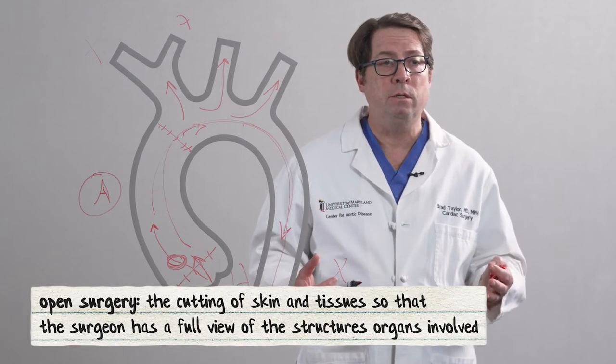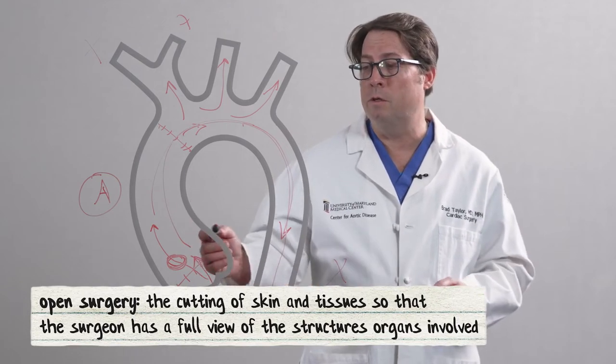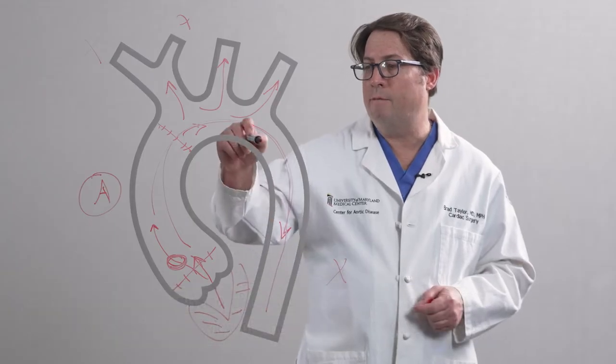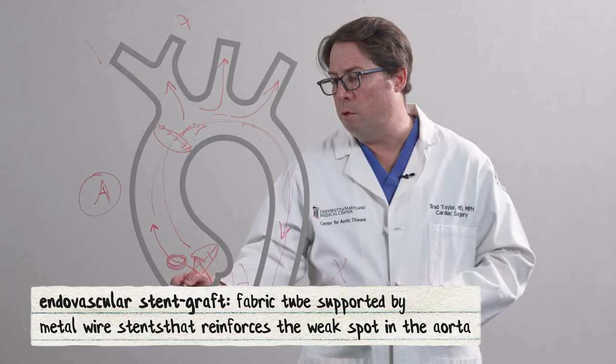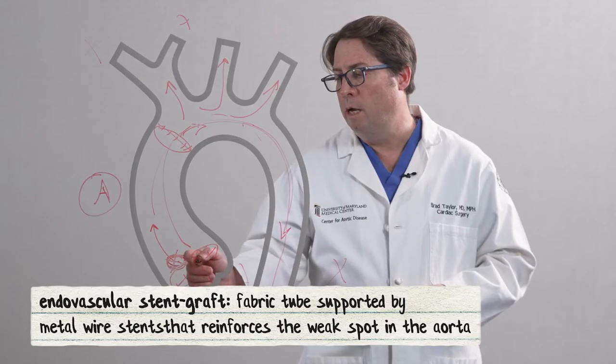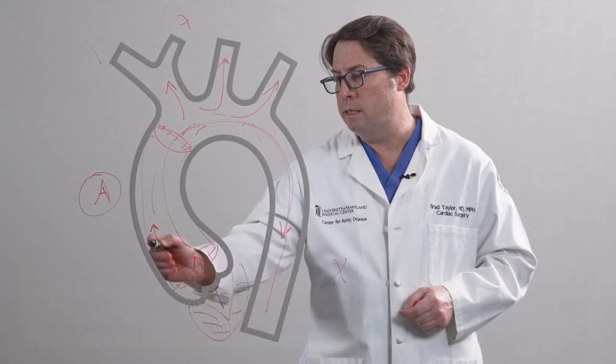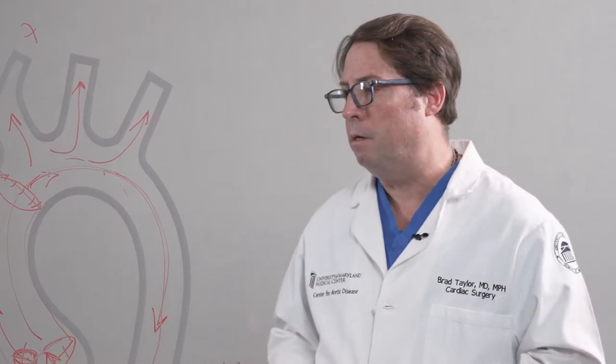In patients who are prohibitive risk or extremely high risk for open surgery, we'll take a stented graft, bring it up, and then deploy a stent graft that will cover over that tear and basically reline the ascending aorta, something we've been very excited about here over the last couple of years.